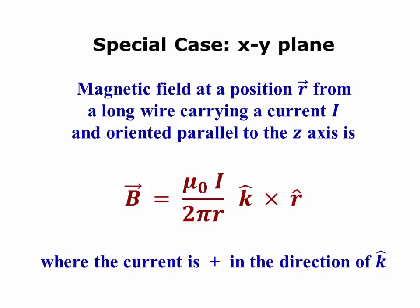Most of the time we'll use Cartesian coordinates. The magnetic field then, at a position R from the wire, is given by mu naught i over 2 pi r, K-hat cross R-hat, because the current is flowing in the K-hat direction.